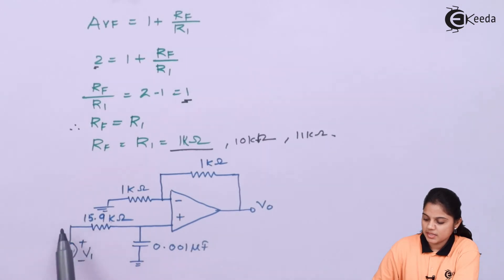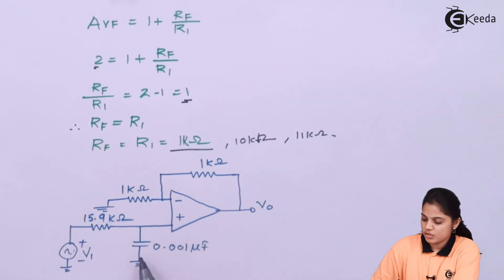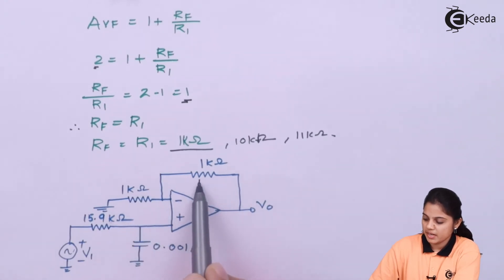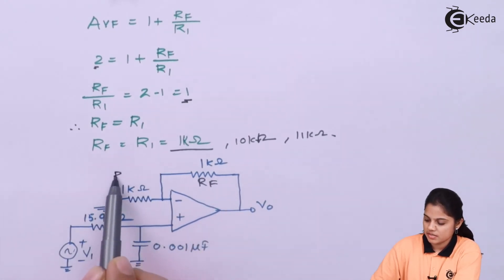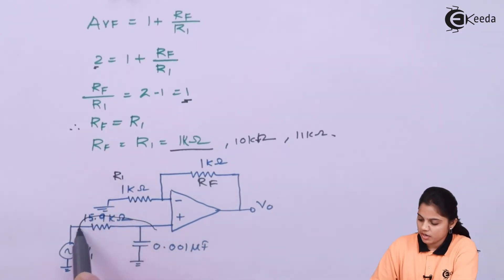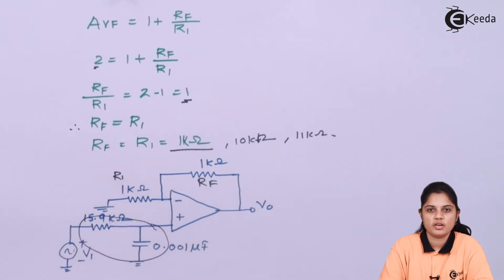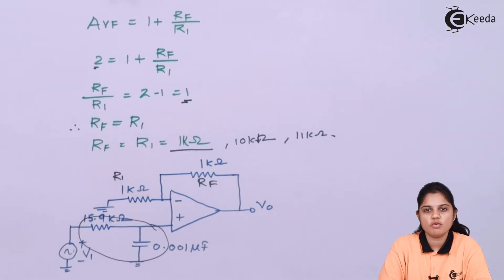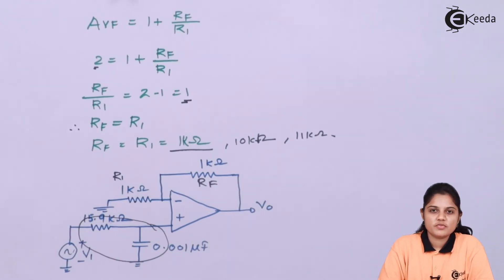Here is the final designed circuit. The resistor value is 15.91 kΩ connected to the non-inverting terminal, the assumed capacitor value is 0.001 microfarad, and both the feedback resistor RF and input resistor R1 are 1 kΩ. This is the final design circuit for the first-order Butterworth low-pass filter, using only one pair of resistor and capacitor. I hope you understood the procedure and the solved problem. Thank you for watching.